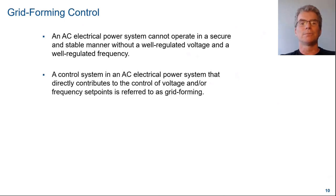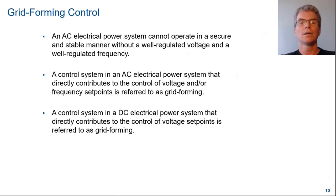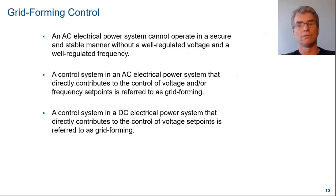On an AC system, any control system that directly contributes to the control of voltage and/or frequency is referred to as a grid-forming controller. On a DC system, any controller that directly contributes to the control of DC voltage is a grid-forming controller.